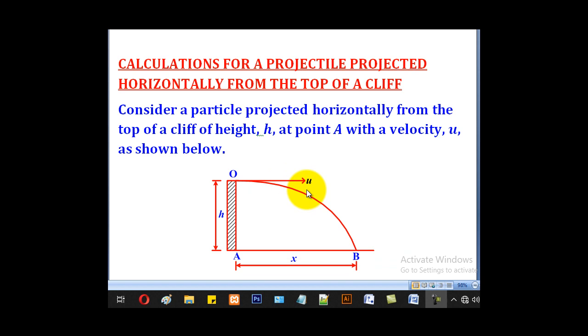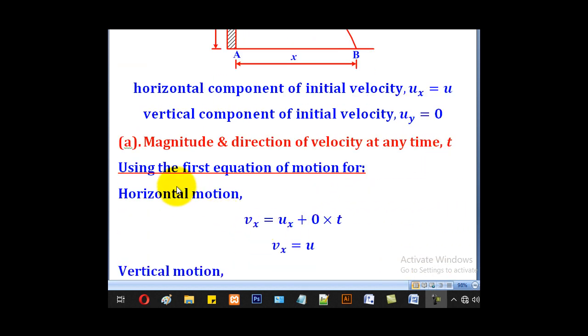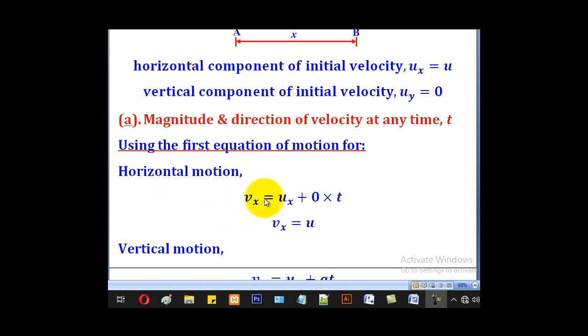Because it is entirely horizontal, it means the vertical component of that velocity will be 0, and the horizontal component will be u. Now using the first equation of motion for horizontal motion, we shall get vx equal to ux plus a for horizontal motion is 0 times t. And remember ux is u, so that means that vx is equal to u.